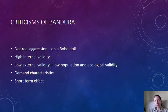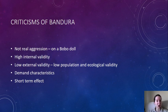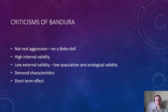Demand characteristics are also an issue. When asked about the experiment afterwards, many children said they thought they were supposed to behave that way. This isn't demand characteristics in the usual sense of working out the aim, but rather that the children thought that's what was expected of them — they watched someone do something and assumed that's what they were meant to do, suggesting they were responding to experimental demand rather than showing a natural tendency to copy aggression.